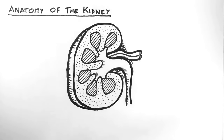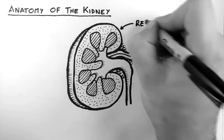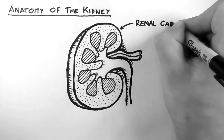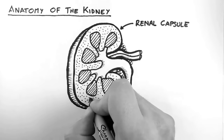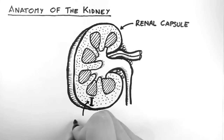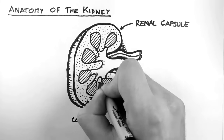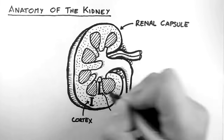First of all, we have the renal capsule, which is a fibrous coating of the kidney. Within the capsule, there are two major divisions: this outside layer we call the cortex, and this inside layer we call the medulla.